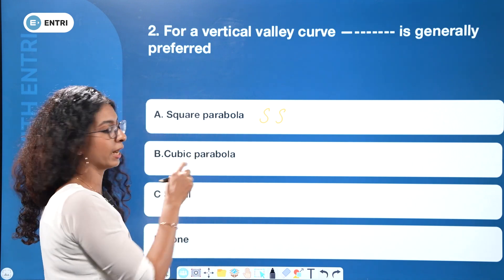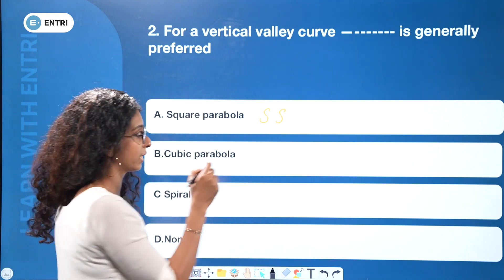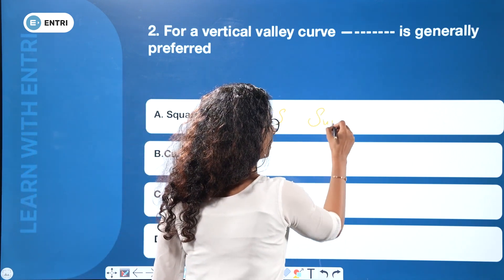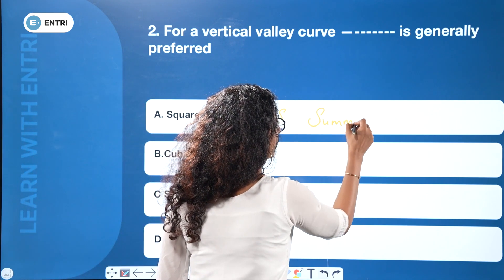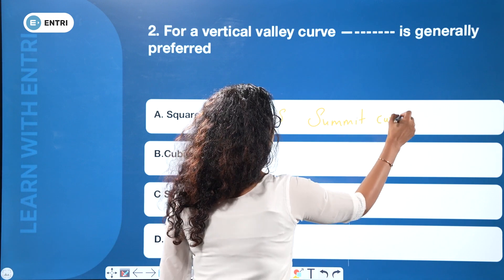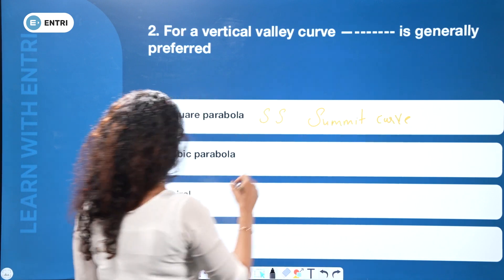Square parabola is used for the summit curve. So, summit curve uses square parabola — that is the shortcut to remember.